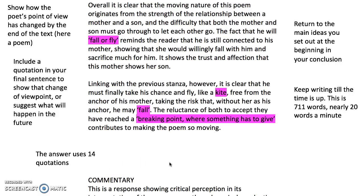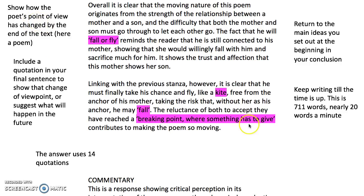Now we get to the end of the essay - this is what's really going to nail your A-star or not: how well you conclude. The concluding paragraph is the final one, although the writer has decided to start with the connective 'overall' to link the two paragraphs together as a conclusion. The first thing to do is show how the poet's point of view has changed by the end of the text. You remember you started with the poet's point of view - well down here there's a new point of view: 'the reluctance of both to accept they have reached a breaking point where something has to give' contributes to making the poem so moving. So it's this lack of acceptance that is a changed point of view from the beginning.